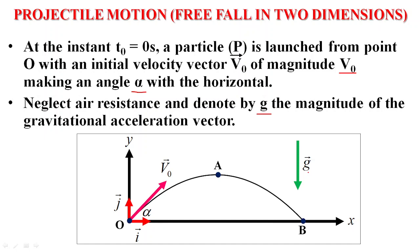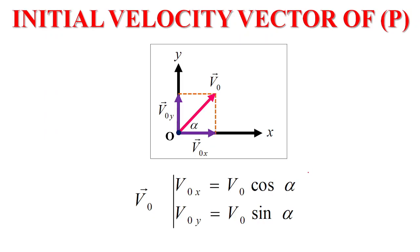In order to solve a projectile problem, always follow these steps: Step one — find the components of v₀, the initial velocity vector. Step two — apply Newton's second law to determine the acceleration vector. Step three — write the velocity vector at any instant t. Step four — write the position vector at any instant t.